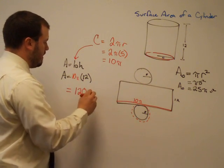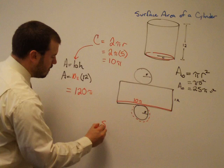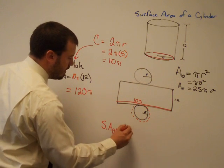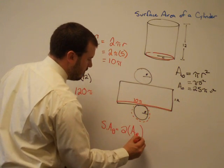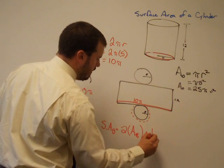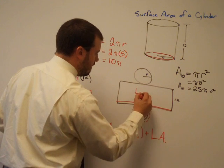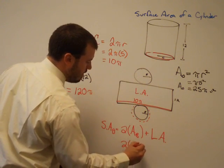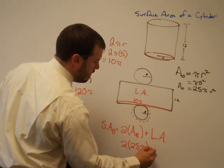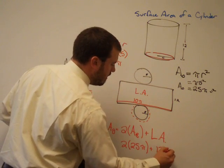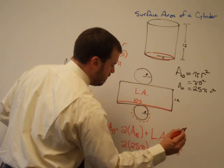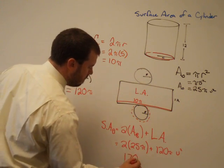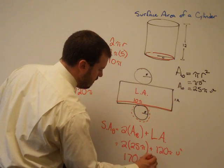So our total surface area of the cylinder is 2 times the area of the base, plus the lateral area. This is the lateral area. So 2 times 25 pi plus 120 pi units squared. 50 plus 120 is 170 pi units squared.